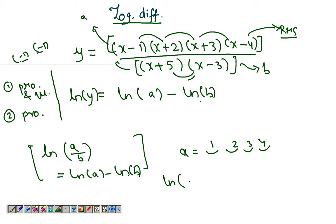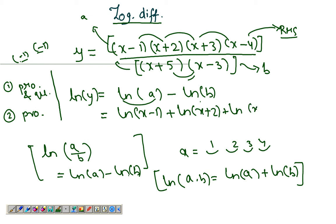Now log of a times b, there's a property - it's log of a plus log of b. So using this property I can rewrite log of a as log of (x minus 1) plus log of (x plus 2) plus log of (x plus 3) plus log of (x minus 4), which are these four things.